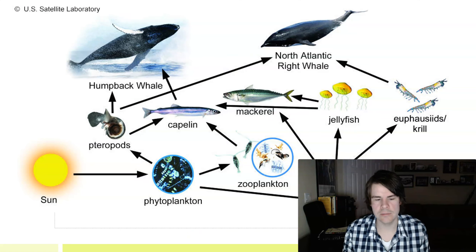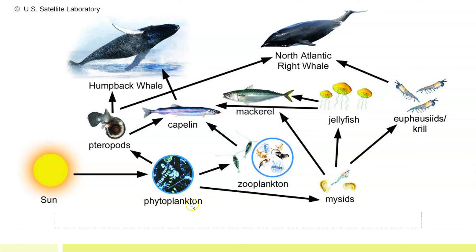Here's a food web from marine systems from the book. The Sun is the foundation, then you have phytoplankton, which allow various zooplankton to eat them — pteropods and mysids. You can see the North Atlantic right whale in this web. Without phytoplankton, there would be no mysids and no krill, and therefore the North Atlantic right whale would have no food. The foundation is always phytoplankton.